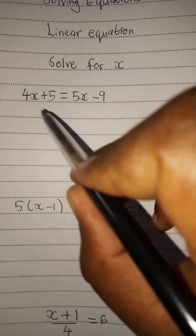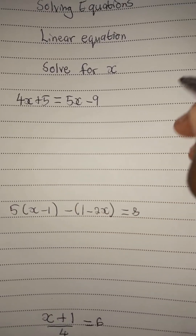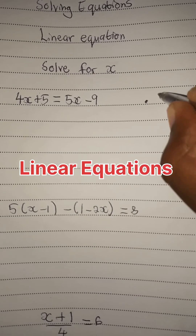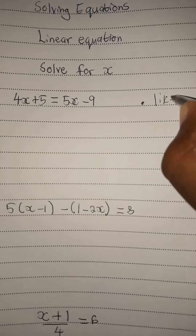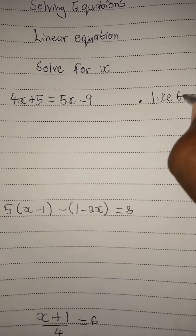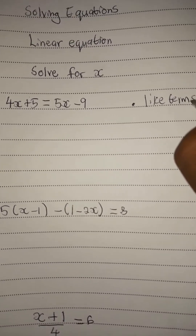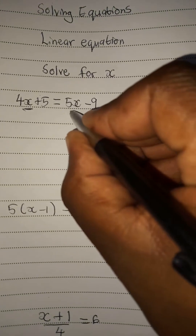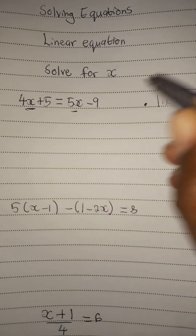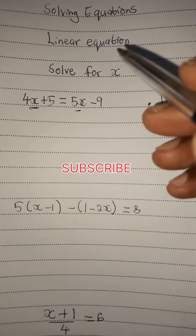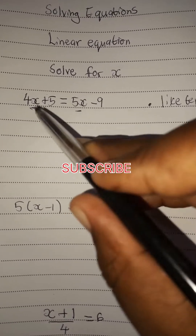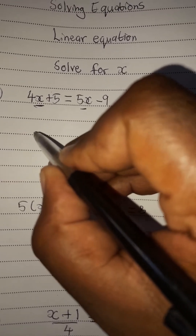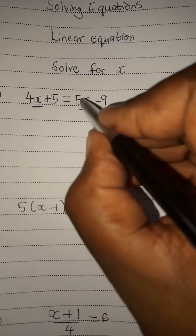So when you are solving such equations, the first thing is to collect like terms. Collect the like terms. The like terms are those terms that are alike, such as 4x and 5x. They have something that is common, which is x. So you have to collect those like terms.